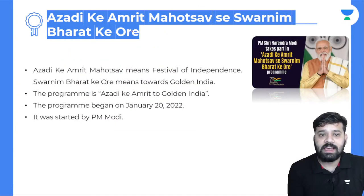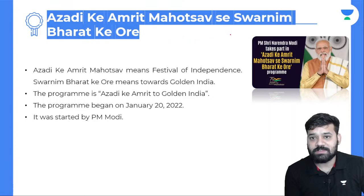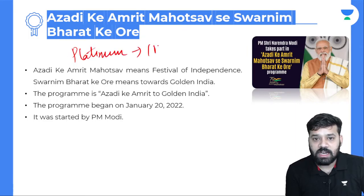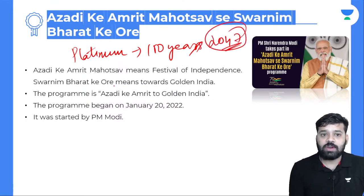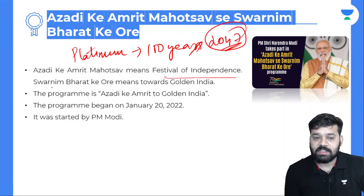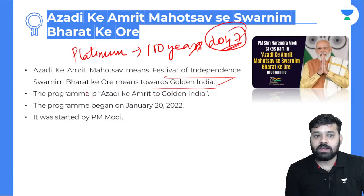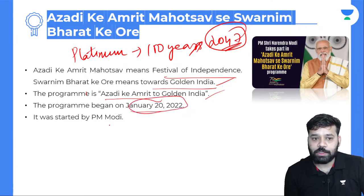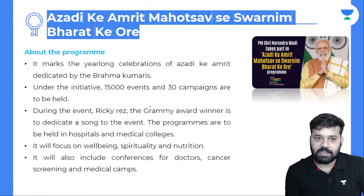Moving to the next topic: from Platinum Jubilee, we are heading towards 100 years of independence in 2047. Azadi Ke Amrut Mahotsav means festival of independence — Platinum Jubilee. Swaranim Bharat Ki Or means towards Golden India. The program is called Azadi Ke Amrut to Golden India. It began on January 20, 2022, started by Prime Minister Narendra Modi.